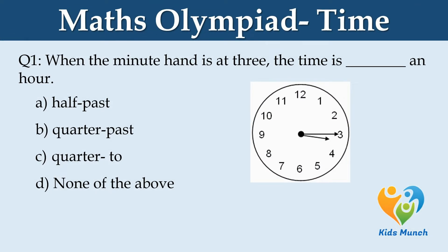When the minute hand is at 3, the time is dash an hour. Option A: half past. Option B: quarter past. Option C: quarter to. Option D: none of the above.